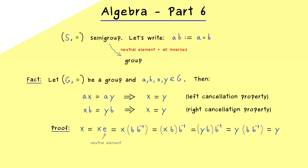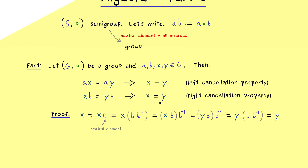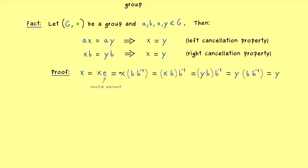If someone tells you something about cancellation properties in groups, they mean these two implications. What we will show in this video is that the two cancellation properties already define the whole group. But before we can do that, I first have to tell you about a definition we use for semi-groups.